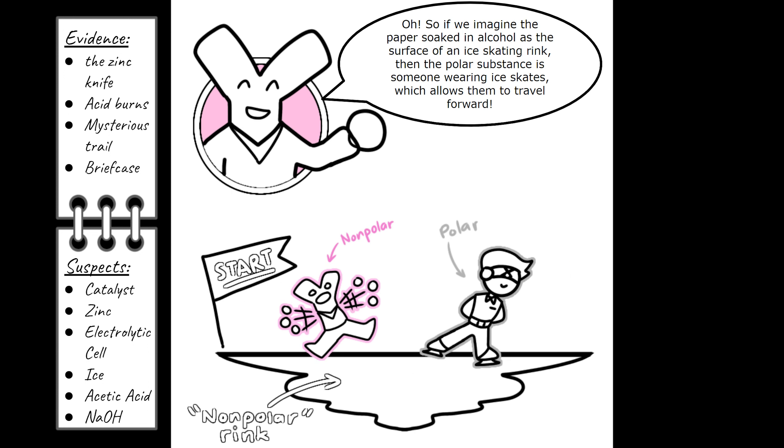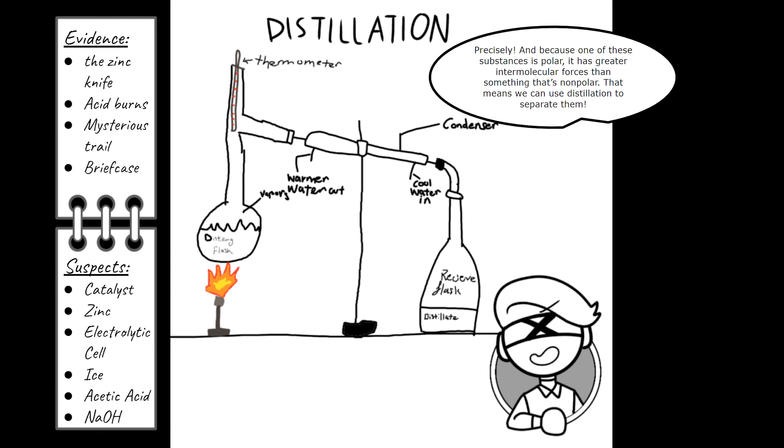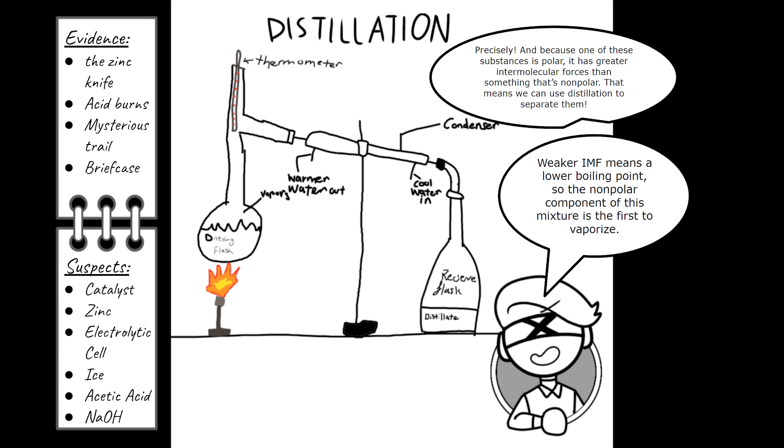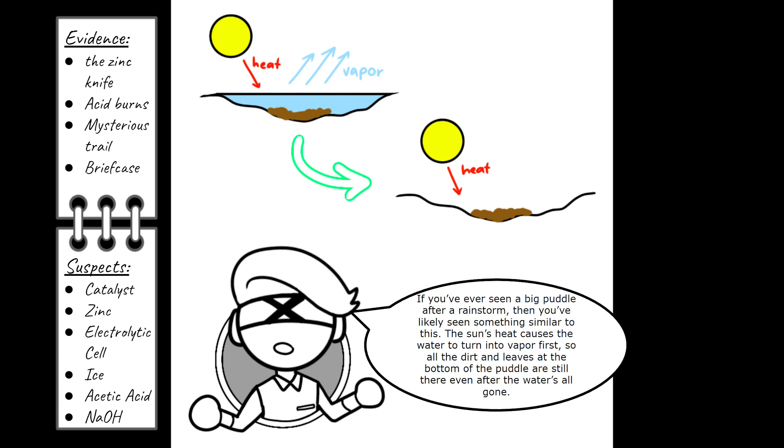Oh, so if we imagine the paper soaked in alcohol as the surface of an ice skating rink, then the polar substance is someone wearing ice skates, which allows them to travel forward. I get it now. Precisely. And because one of these substances is polar, it has greater intermolecular forces than something that's non-polar. That means we can use distillation to separate them. Weaker IMF means a lower boiling point, so the non-polar component of this mixture is the first to vaporize. If you've ever seen a big puddle after a rainstorm, then you've likely seen something similar to this. The sun's heat causes the water to turn into vapor first, so all the dirt and leaves at the bottom of the puddle are still there even after the water's all gone.